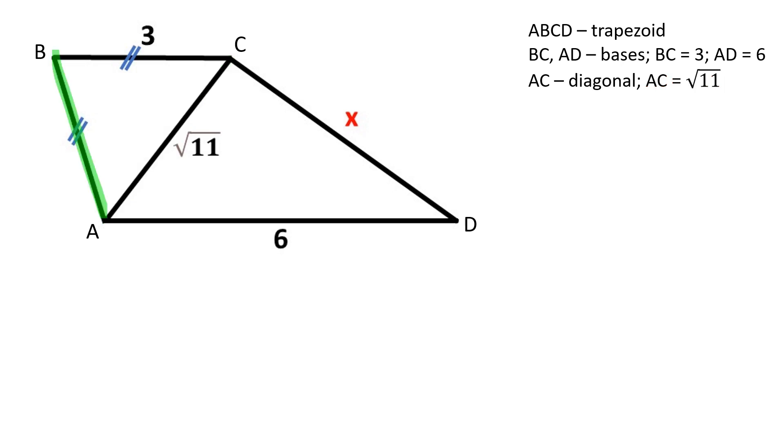AB is one of the legs of the trapezoid. AB is equal to BC. We need to find the other leg of the trapezoid CD.